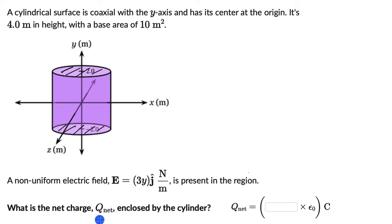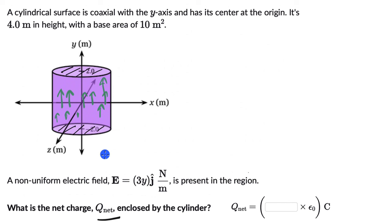Now we need to figure out the net charge q_net. The electric field is 3y ĵ — it's non-uniform, so its magnitude changes in different regions. To find q_net, we think about which principle applies here. There will be some net charge enclosed because there is an electric field inside, and this electric field will pass through the top and bottom surfaces, producing a net flux. So we apply Gauss's Law.